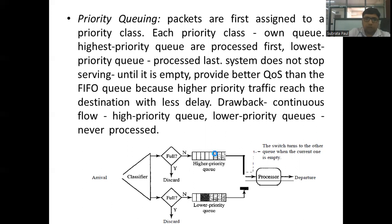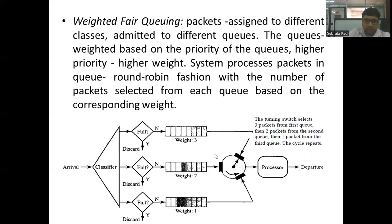Next, we come to the third scheduling technique, that is weighted fair queuing. In this technique, weights are assigned to each priority class such that higher priority queues get higher weight, while lower priority queues get lower weight. The weight assigned to each queue indicates the number of packets that will be processed from that queue. For example, if there are three queues with priorities 1, 2, and 3, and weights assigned as 4, 1, and 2 respectively, then initially four packets will be processed from Q1, then one packet from Q2, and finally two packets from Q3.